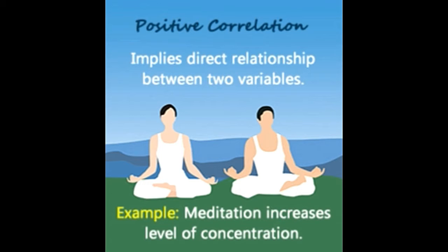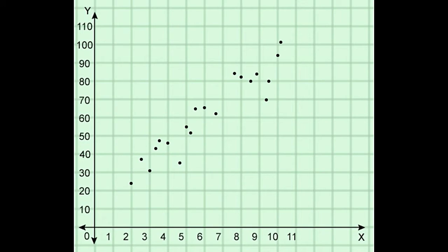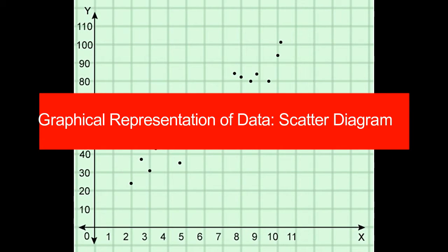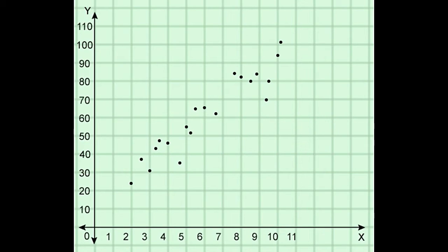The scatter diagram helps us visualize the correlation. In psychology, correlation can be helpful in studying behavioral patterns — for example, if you want to study whether depressed students fail or score poorly in examinations, you can plot your observations and study the association. After plotting the points, we can notice the upward/rising trend of the scatter diagram, indicating that as X increases, Y also increases. This shows that students who put in more hours of study scored better in the test.